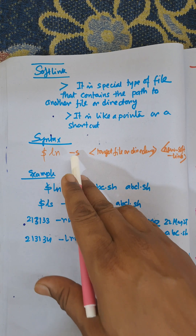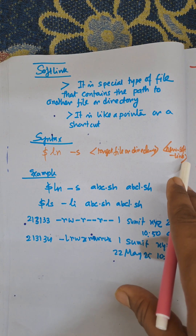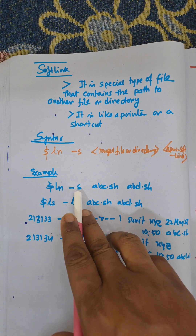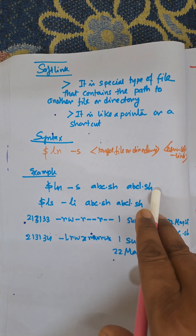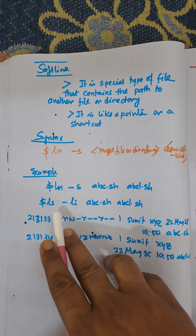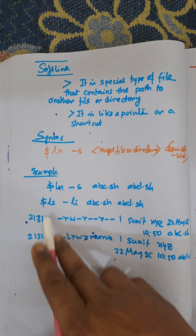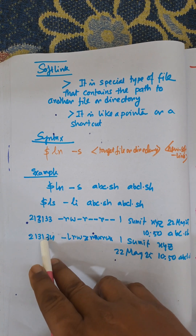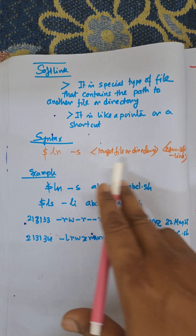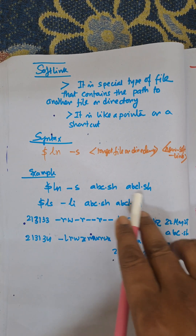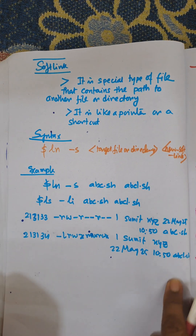For example, the command is ln -s. This is the target file or directory, and the new softlink name follows. The -s flag is used for creating a softlink. So this is the target file or directory, and this is the new link — for example, the new link of abc.sh. In this way, a softlink is created.